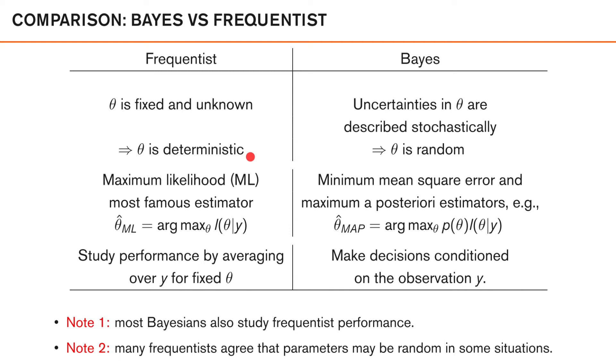Now, a very common example of an estimator in the frequentist framework is what's called a maximum likelihood estimator, where the estimate is simply the value of theta that maximizes the likelihood after observing the data y. If you compare that to the Bayesian framework, the corresponding estimator is the maximum a posteriori estimator, which finds the theta that maximizes the posterior distribution, which is the product of the prior times the likelihood after observing the data y.